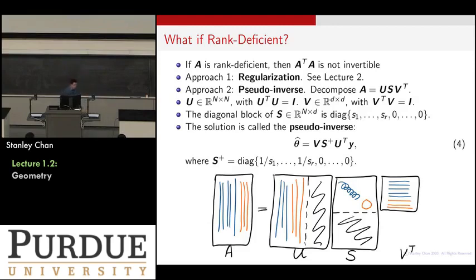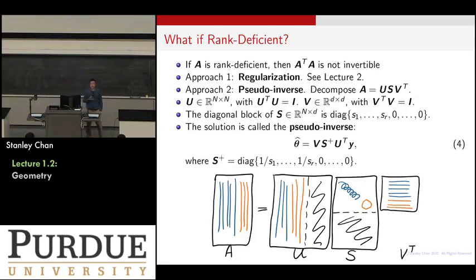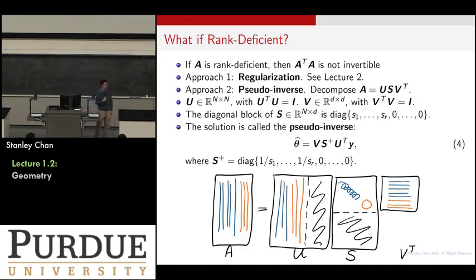When column dependency happens, there are two approaches. Approach one is called regularization, which has to do with your loss function — we'll talk about that next time. Approach two is the pseudoinverse, which involves singular value decomposition — something you are encouraged to look into in a tutorial or textbook.